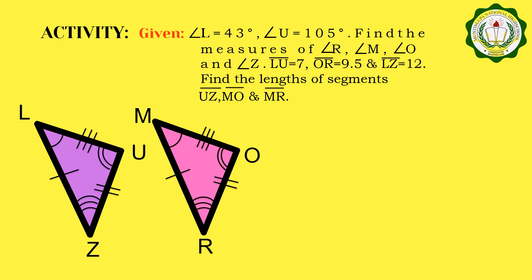As for the sides, you are given segment LU is equal to 7, segment OR is equal to 9.5, and segment LC is equal to 12. You are going to find the lengths of segments UC, MO, and MR.